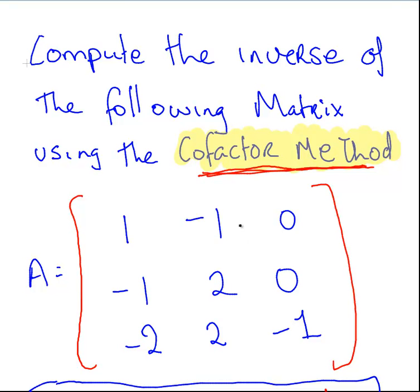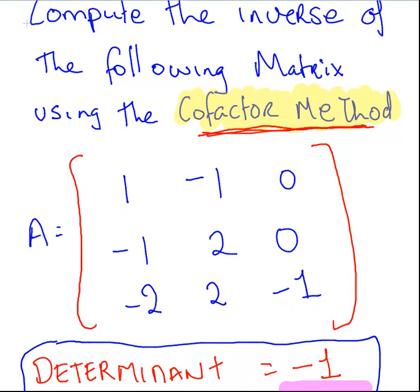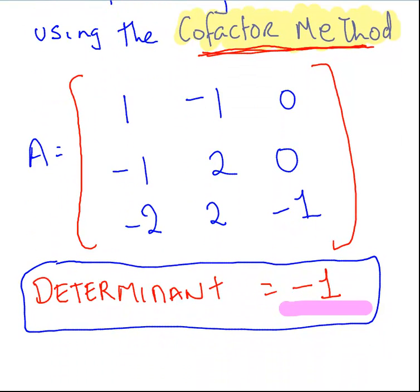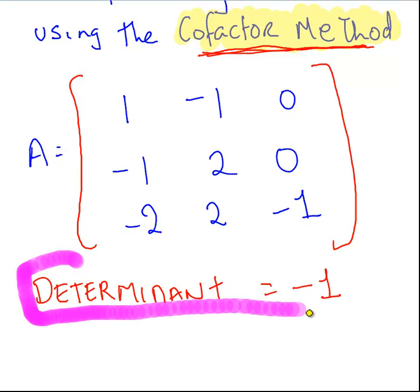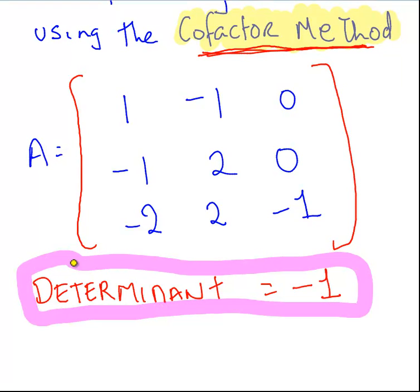So, there are lots of minuses knocking around, so just be careful that you don't drop any signs. As a remark, I'm not going to work through it here, but I'm going to state that the determinant of this matrix is minus 1.